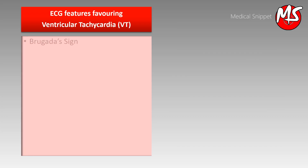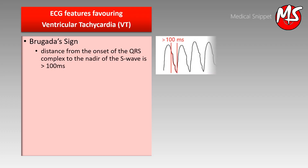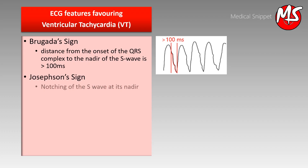The distance between the onset of the QRS complex and the nadir of the S wave is more than 100 milliseconds in VT — this is called Brugada's sign. Josephson's sign is notching near the nadir of the S wave.